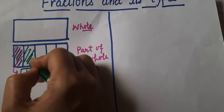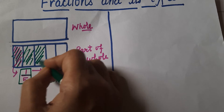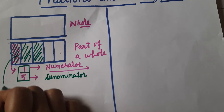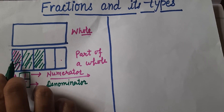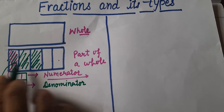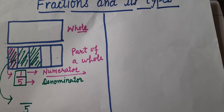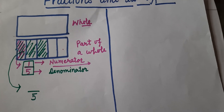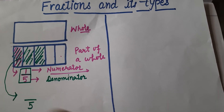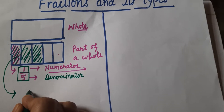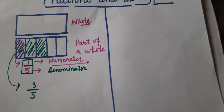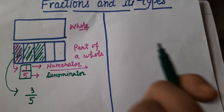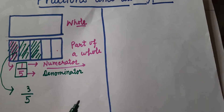Suppose I have shaded three portions. So what is the fraction? First I count all the parts — all the parts are five, so the denominator will be five. The portions shaded are three, so three upon five will be its fraction. In this way you can find out the value of a fraction.